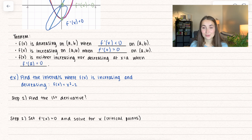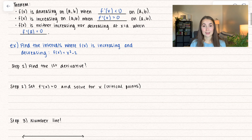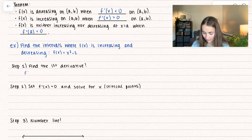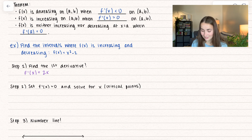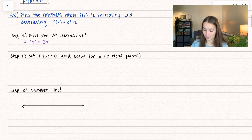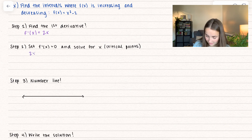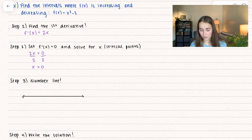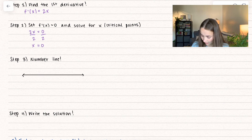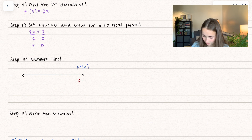Let's dive into an example together. Find the intervals where f of x is increasing and decreasing — we have the same function, but now we'll do it with mathematics. Our first step is to find the first derivative, which is f prime of x equals 2x. Our second step is to set that derivative equal to 0 and solve for x — the critical points. So 2x equals 0, divide by 2, and we get x equals 0. This is one of our critical values.